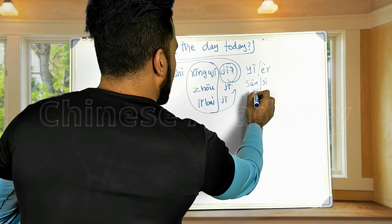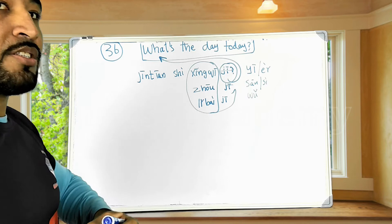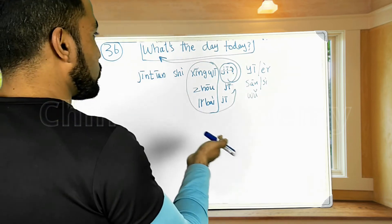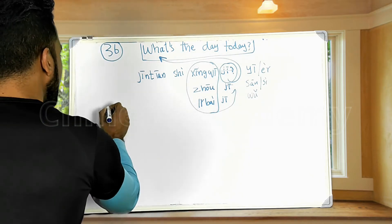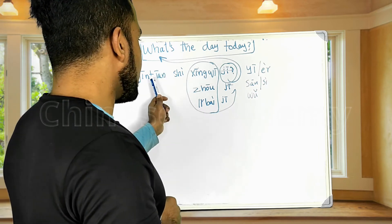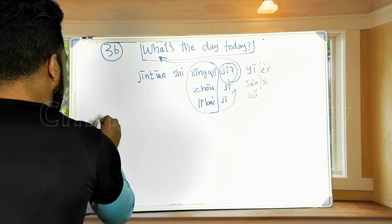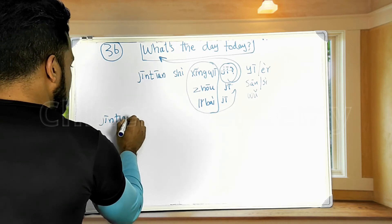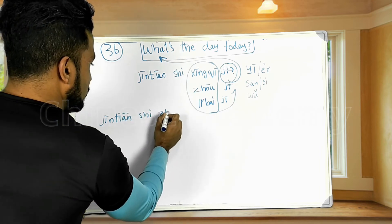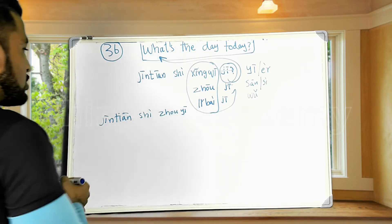Friday is 星期五 (xīngqī wǔ). Saturday and Sunday are like the weekend, so you can answer 今天是周末 (Jīntiān shì zhōumò) — today is weekend. Coming back to the first question, we answered that today is Monday: 今天是星期一 (Jīntiān shì xīngqī yī).